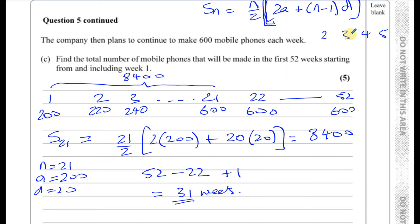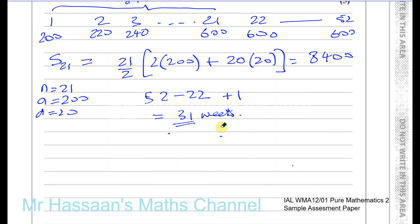There's not 3 weeks if you do 5 minus 2—you think it's 3, but there's actually 4. You have to add 1. The subtraction gives us the gaps between them, but if you want to find how many terms are actually between 2 and 5, there's 4 terms. You can see that with your eyes, but 5 minus 2 gives you 3. So 52 minus 22 gives 30, but there's actually 31 terms—30 gaps but 31 terms. So it's 31 weeks.